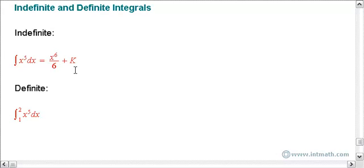k is just some constant. We might have some information elsewhere in the problem that help us define the constant. In this case, we don't have any extra information, so it's just plus k.